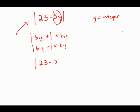So if I have 23 minus 20, that's 3. Absolute value of 3 is 3.